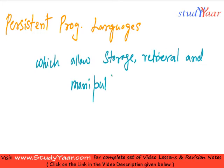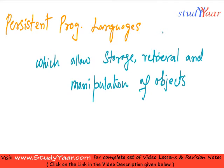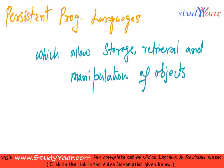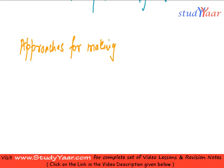We have already seen what a persistent object is. So these languages would have their objects living beyond the execution of the program. Even when the program is over, the objects would probably be stored in a database, and you can use that object when the program comes back up another time. So now we are going to see approaches for making objects persistent.